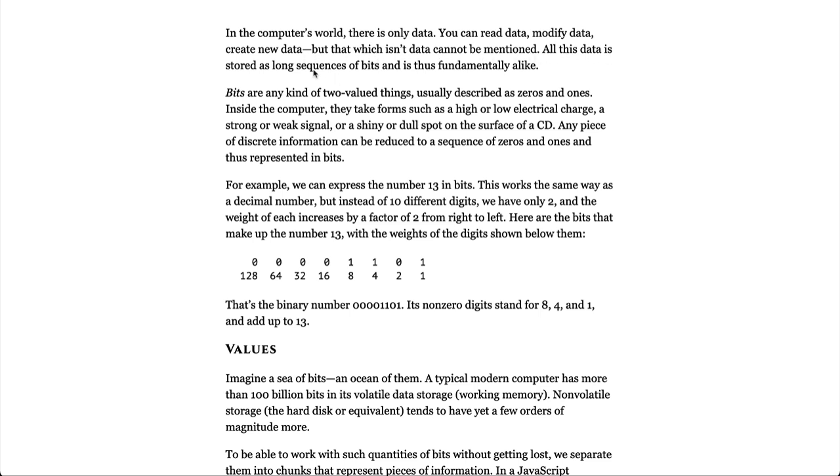All this data is stored as long sequences of bits and thus fundamentally alike. Bits are any kind of two-valued things, usually described as zeros and ones. Inside the computer, they take forms such as high or low electrical charge, a strong or weak signal, or a shiny or dull spot on the surface of a CD.